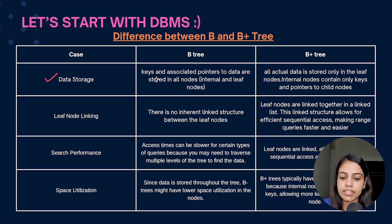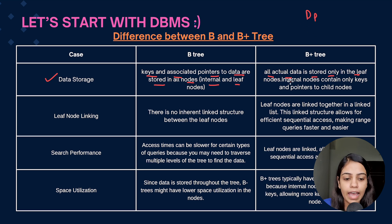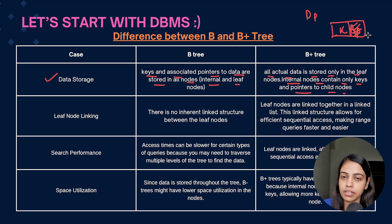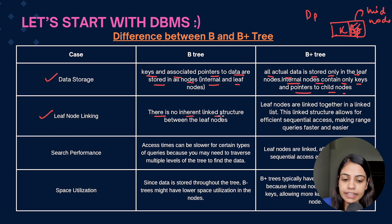The first difference is data storage. In a B-tree, keys and associated data pointers are stored in all nodes — both internal and leaf nodes. In a B+ tree, all actual data is stored only in the leaf nodes; the data pointer is only in the leaf node. Internal nodes only contain keys and pointers to child nodes, so only leaf nodes have data pointers.